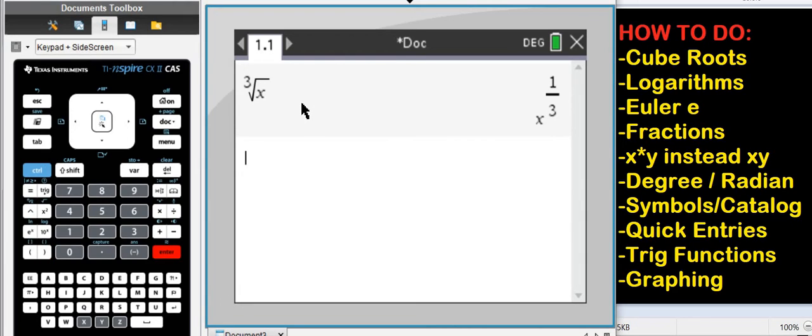How are you going to get the fifth root, for example? X comma 5. Easy enough, right?